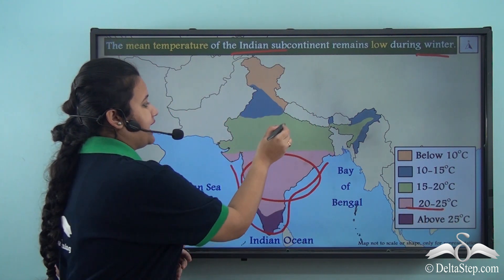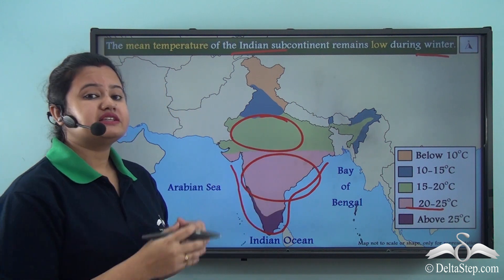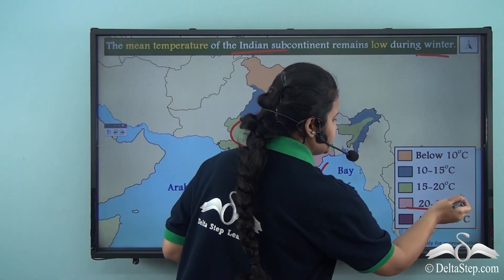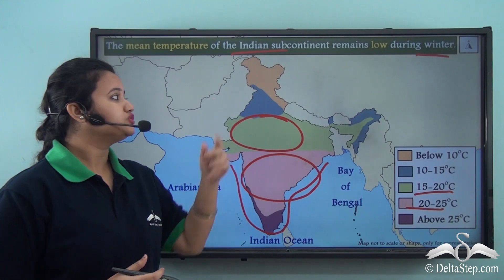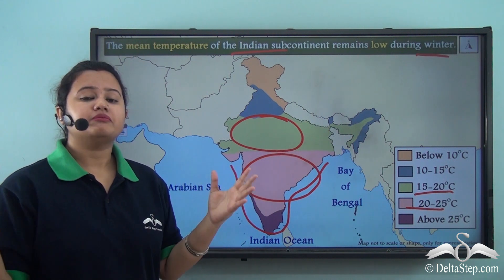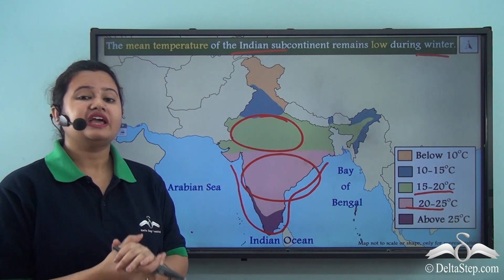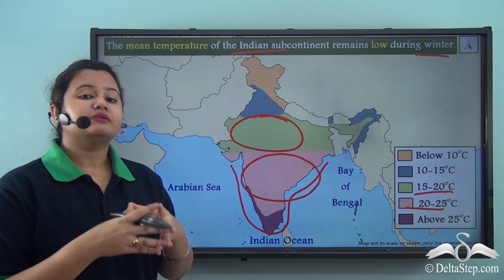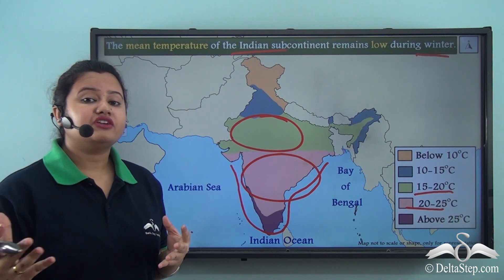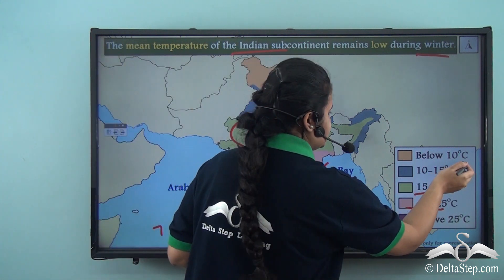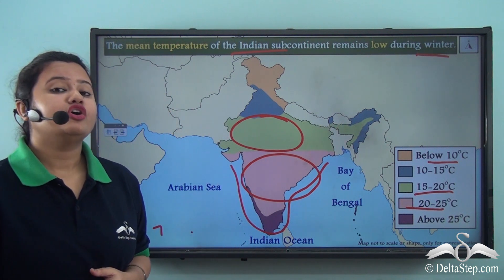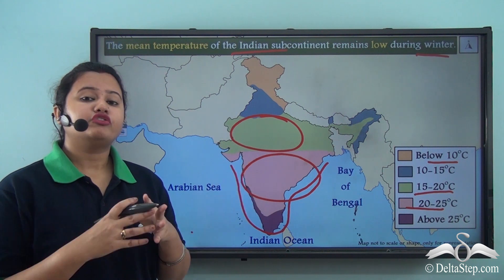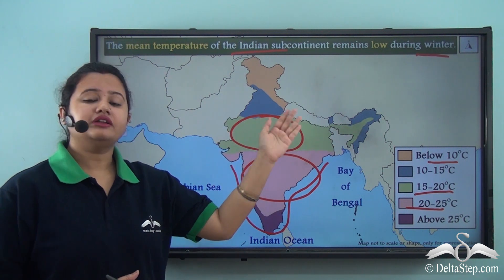The northern plains and central India are relatively cooler, with mean temperatures ranging between 5°C to 20°C. In the northernmost part — the Himalayan mountains — the lowest temperatures are observed. The mean temperature falls even below 10°C and sometimes drops below freezing point. Due to this extremely low temperature, frost and snowfall are common in the Himalayan region.